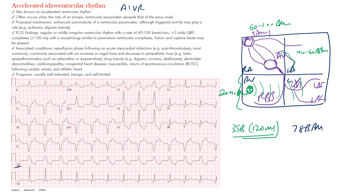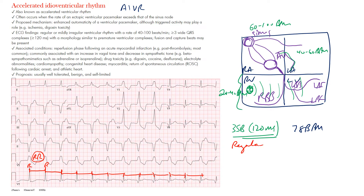The rate is 78 beats per minute and the rhythm is quite regular — the R-to-R intervals are equidistant, so we call this a regular rhythm. Notice there are no P waves preceding these complexes. Lead II and V1 tend to be good leads to look for P waves.